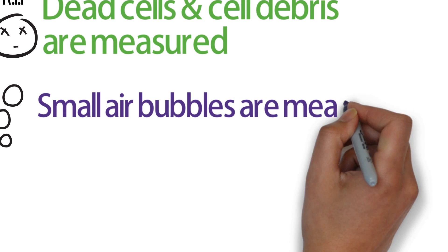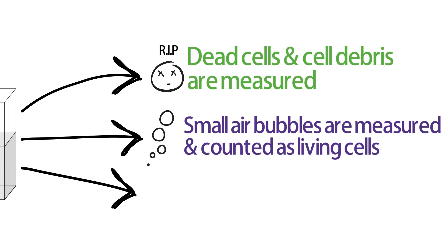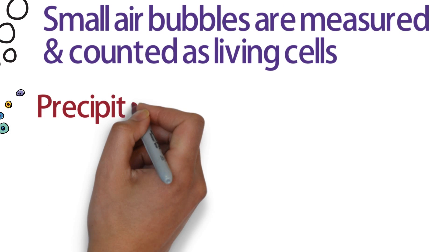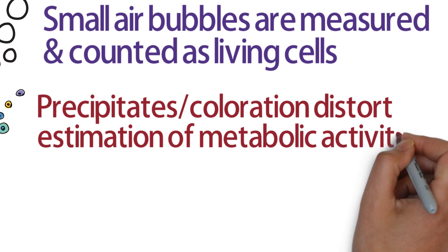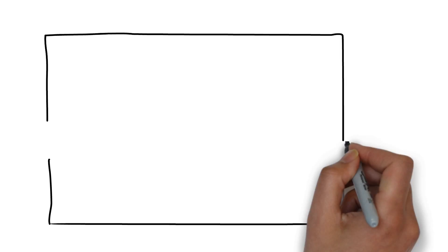Small air bubbles are measured and counted as living cells. The number of microscopic air bubbles, especially in dense cultures, may be quite high. Precipitates or coloration will also distort the estimation of metabolic activity of the measured culture.